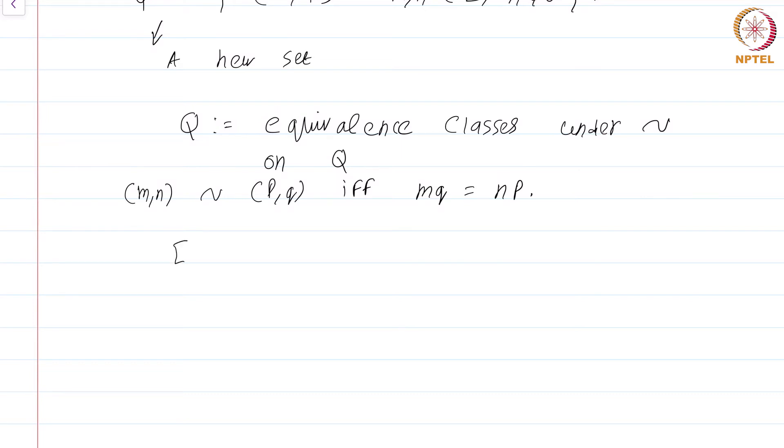Given any equivalence class, let's say A in Q, it can be represented as [m,n] where (m,n) is some ordered pair of integers with n not equal to 0.